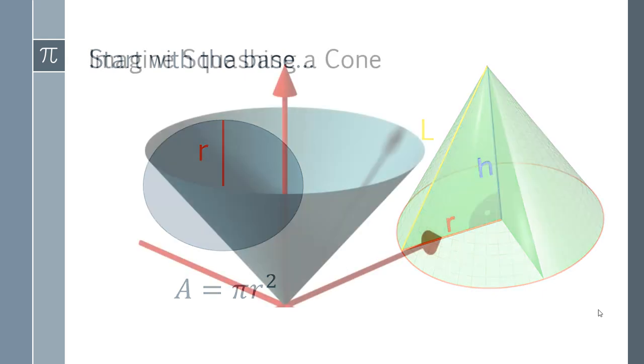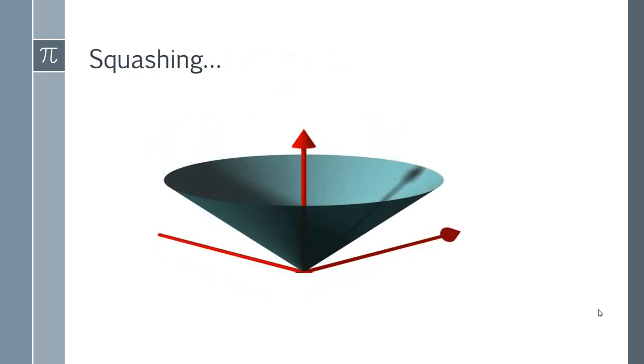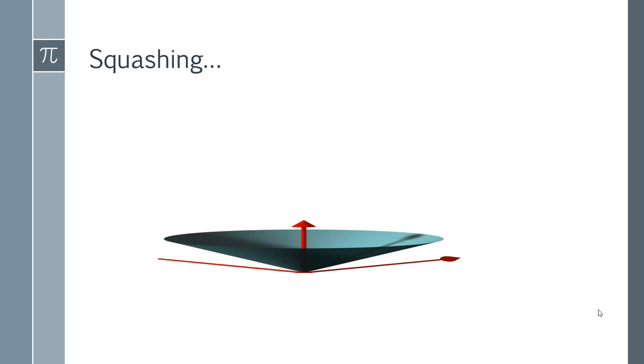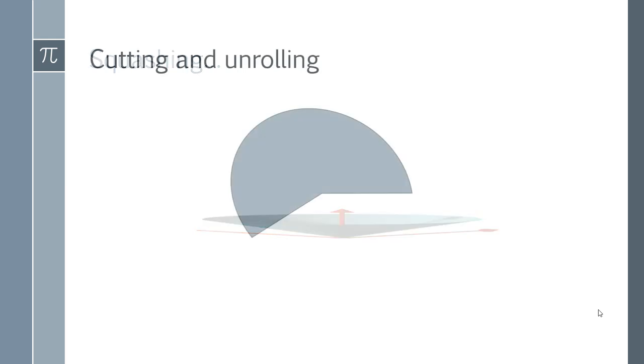But when we imagine it this way, it starts to get a lot simpler. So let's imagine we squash a cone. We've got a cone shape there and we squash it down a bit more and we squash it down even further. And then we keep squashing until eventually you get a completely flat surface.